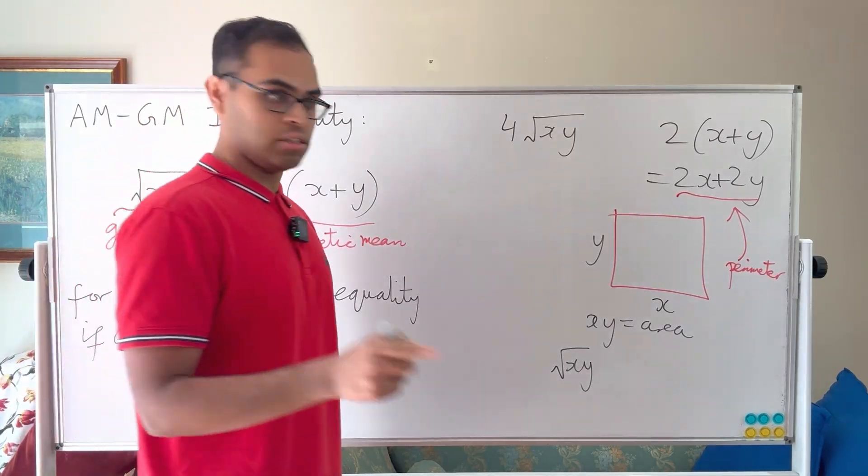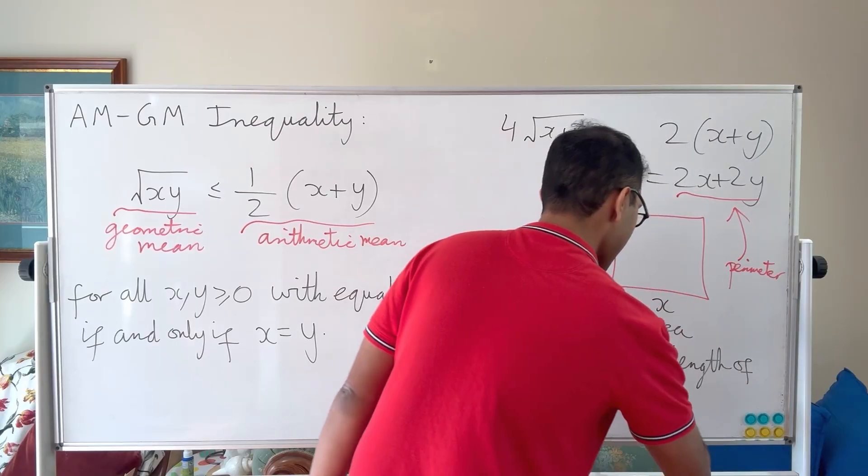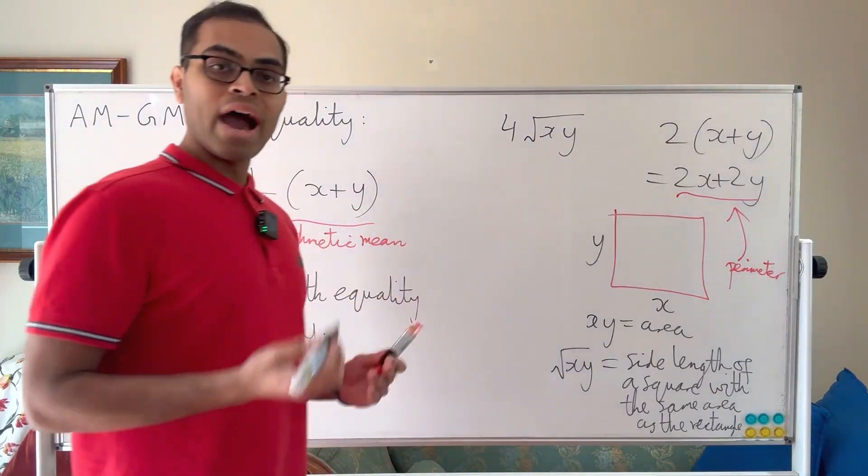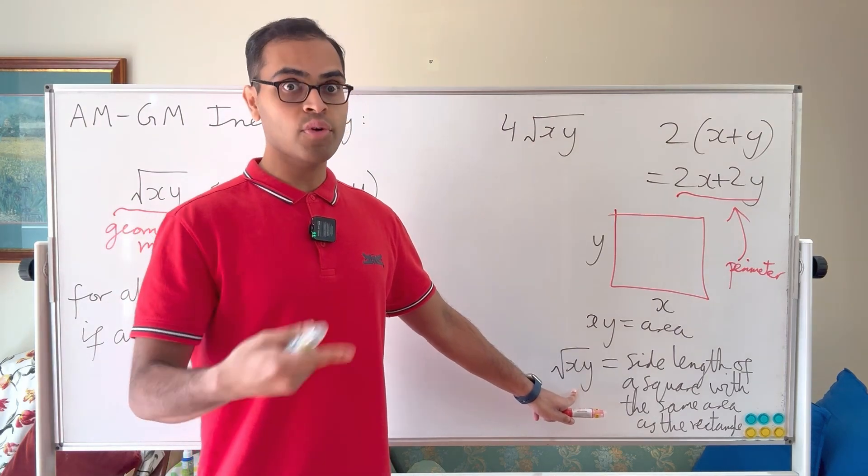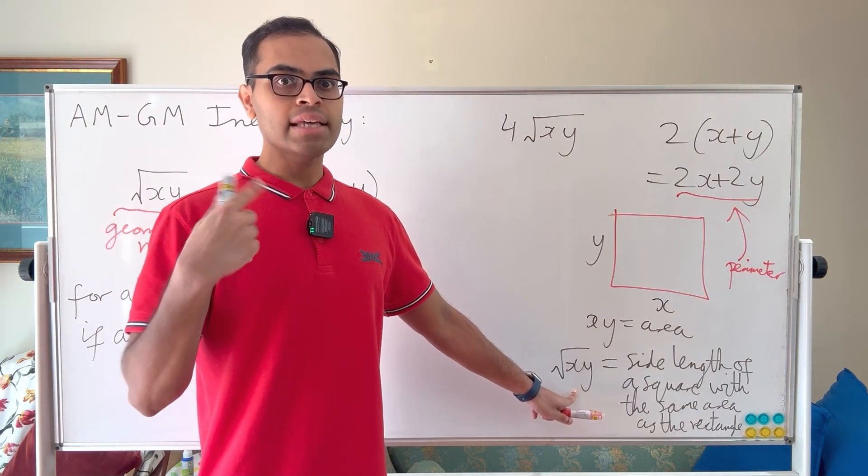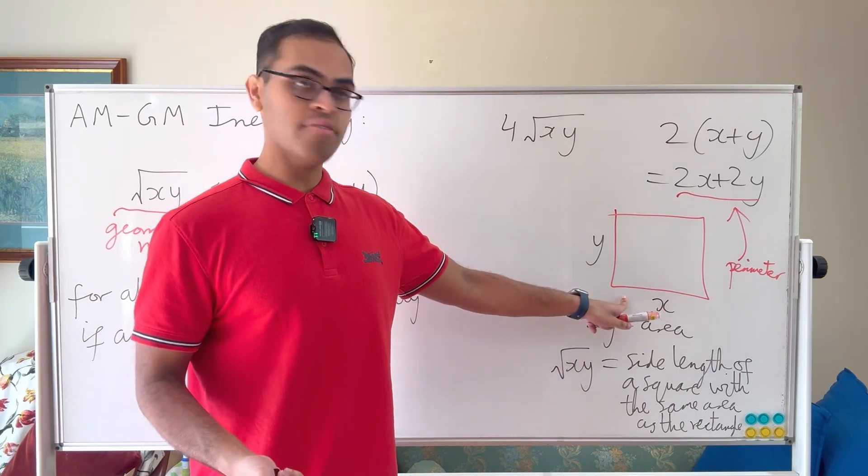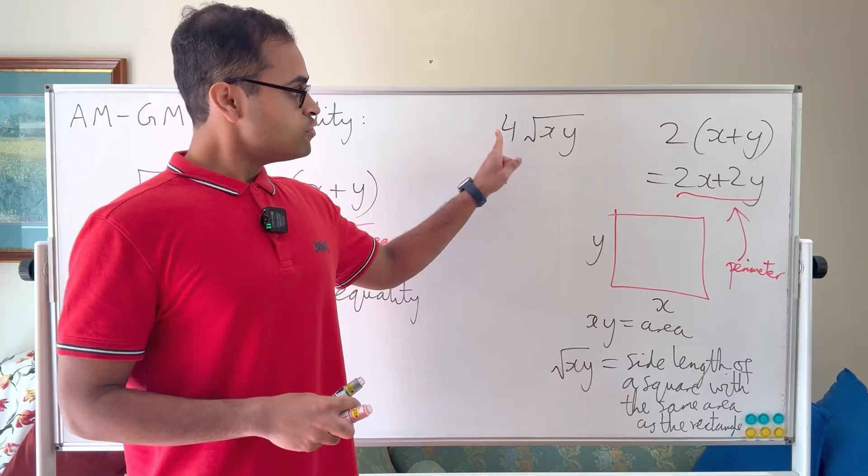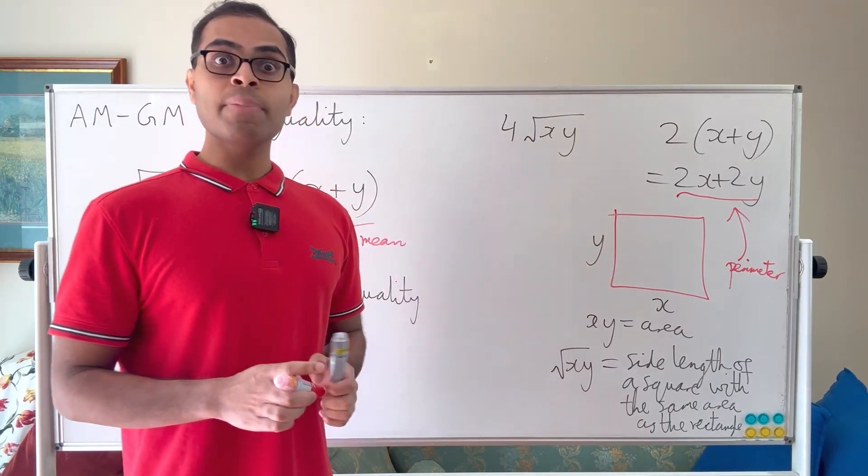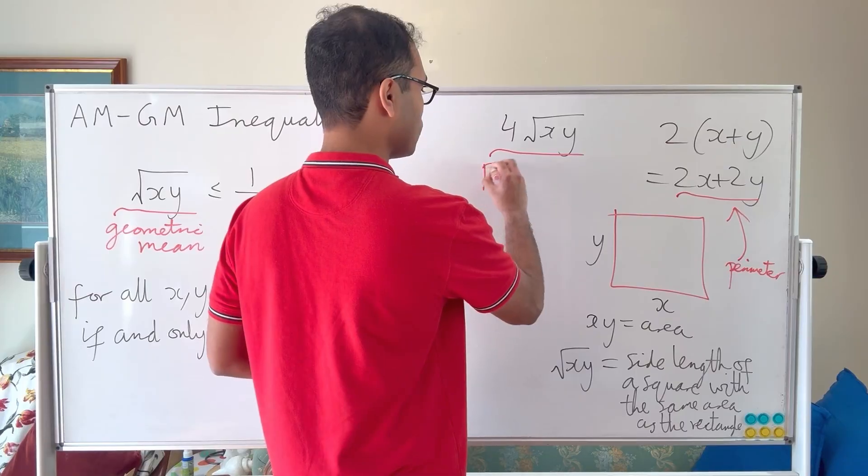The square root of xy is the side length of a square with the same area as the rectangle. This is important because if you have a square with that side length, then its area is going to be the square of that, which is x times y, the area of the rectangle. So what this inequality is telling us is 4 square root xy is the perimeter of that square.